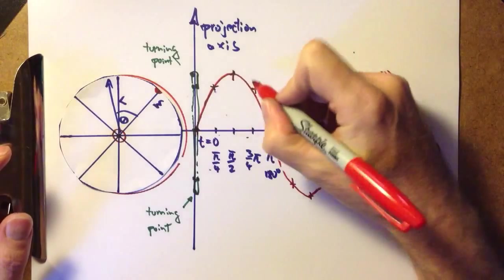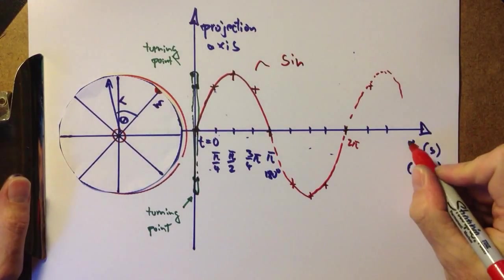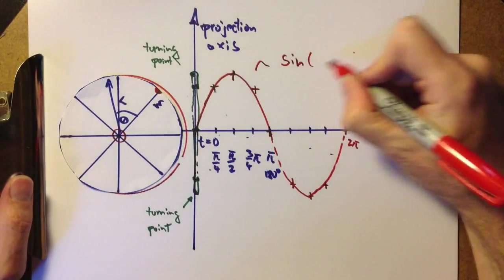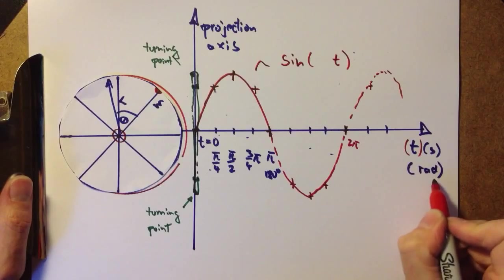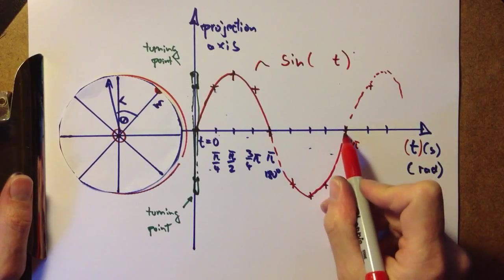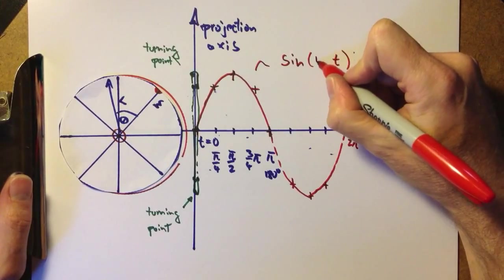Now the function you see developing here is a sine function. And it's a function of t. So we have to have t in the argument. And if we quantify it in terms of radians, we need to obtain 2π at this point. So we need a calibration constant, which we call ω.